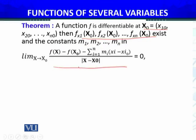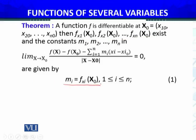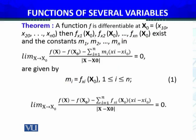are given by these partial derivatives. The definition of differentiability of a function of several variables f at the point x0 becomes: limit as x approaches x0 of [f(x) - f(x0) - Σ(i=1 to n) mi(xi - xi0)] divided by |x - x0| equals 0.